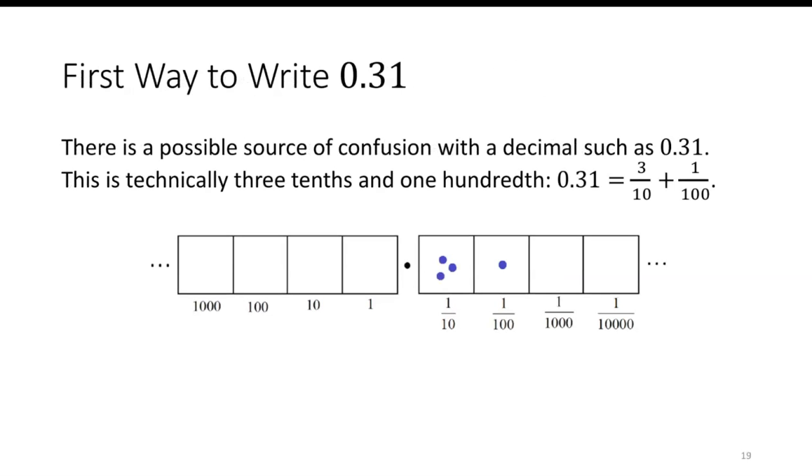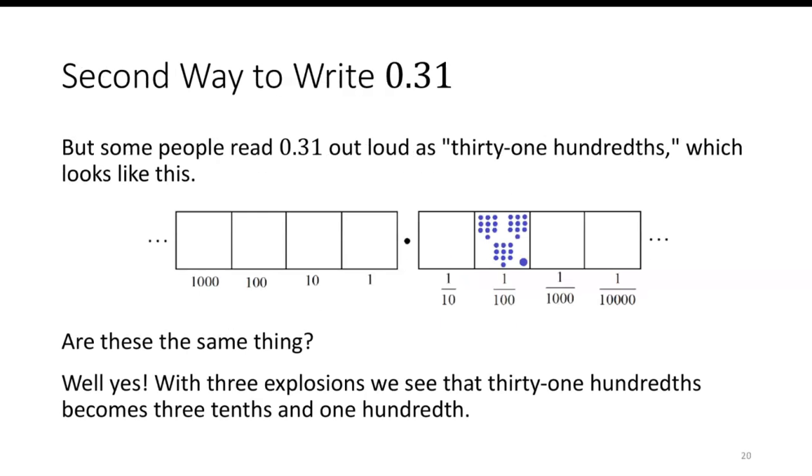Now, a possible source of confusion with a decimal is a number like thirty-one-hundredths. This is technically three-tenths and one-hundredth, as you see, three dots in the tenths place and one dot in the hundredths place. But we read the decimal as thirty-one-hundredths, which would suggest thirty-one dots in the hundredths place.